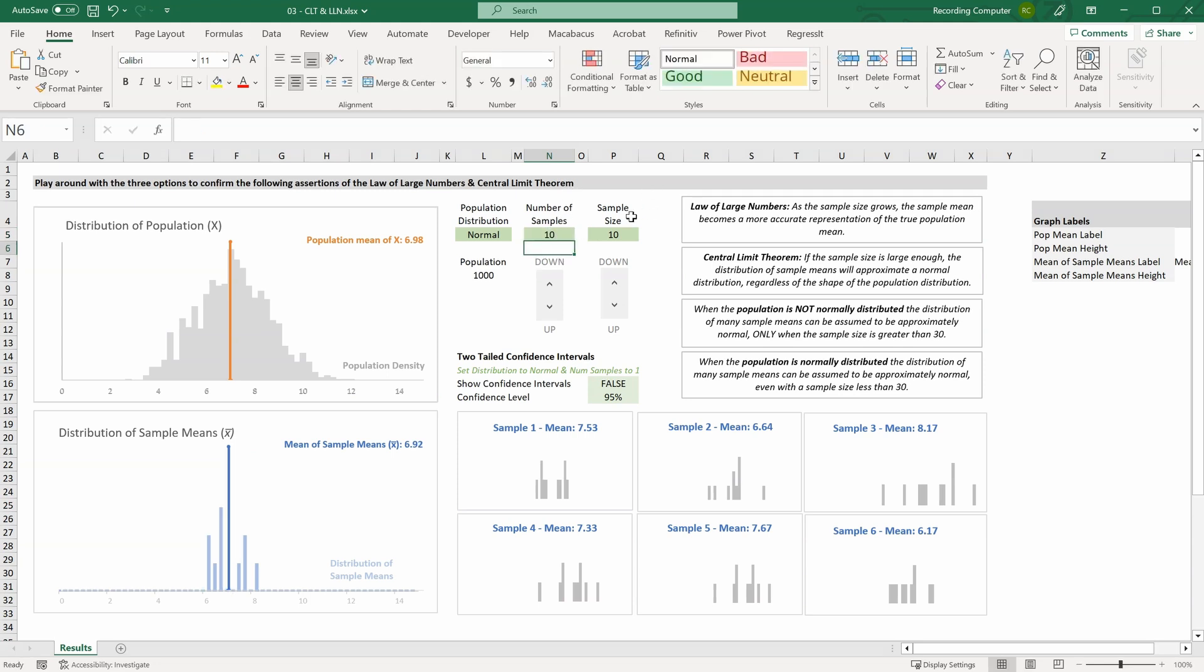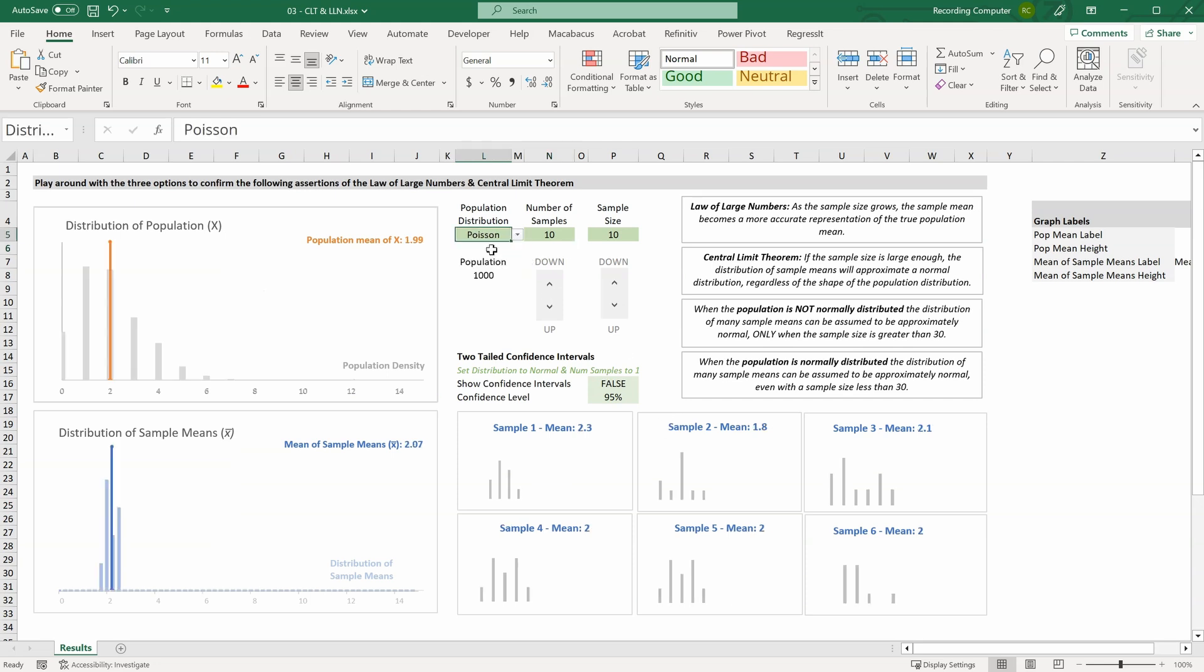So we have 10 samples with a sample size of 10. And let's change the population distribution from normal to a Poisson distribution. And when I do that, when we look at the distribution of our sample means, we can see that it doesn't really look like that normal distributed bell curve anymore. But let's increase our sample size to 30. It's starting to look a little bit more normal. And if we increase our sample size to 50, we can see it is looking more normal now. So even though our population distribution is not normal, as long as our sample size is big enough, we're going to start to see a more normal looking distribution of our sample means.